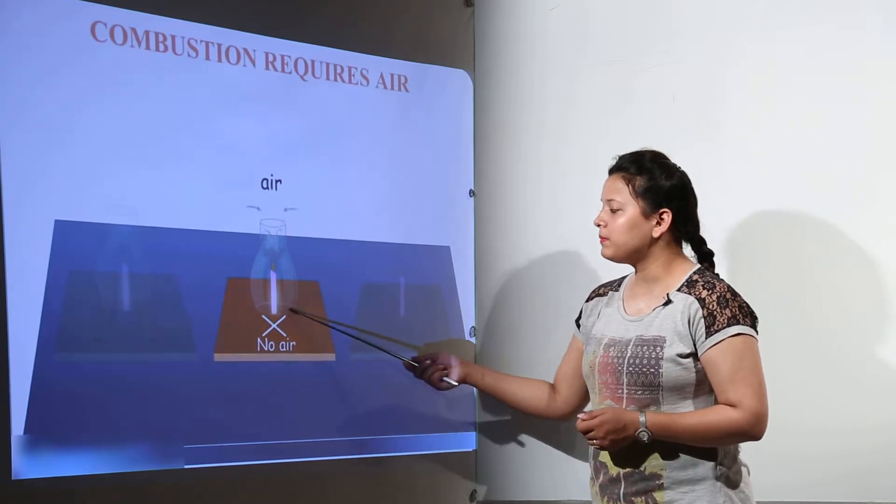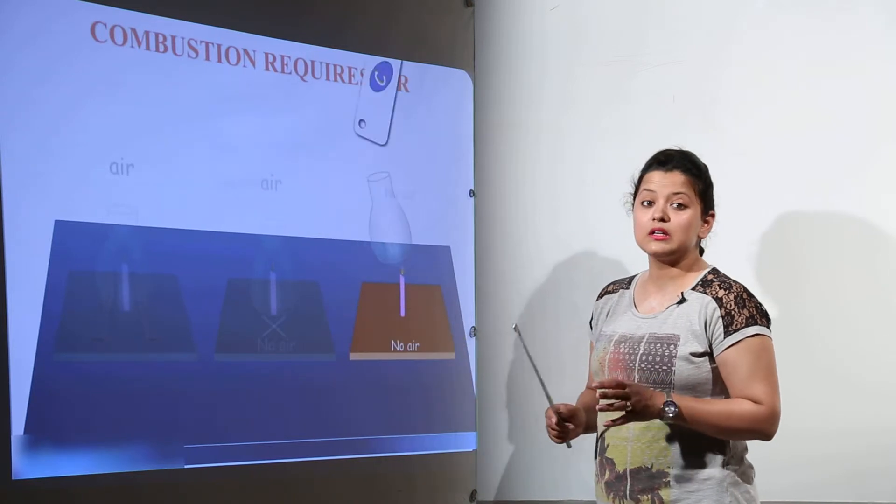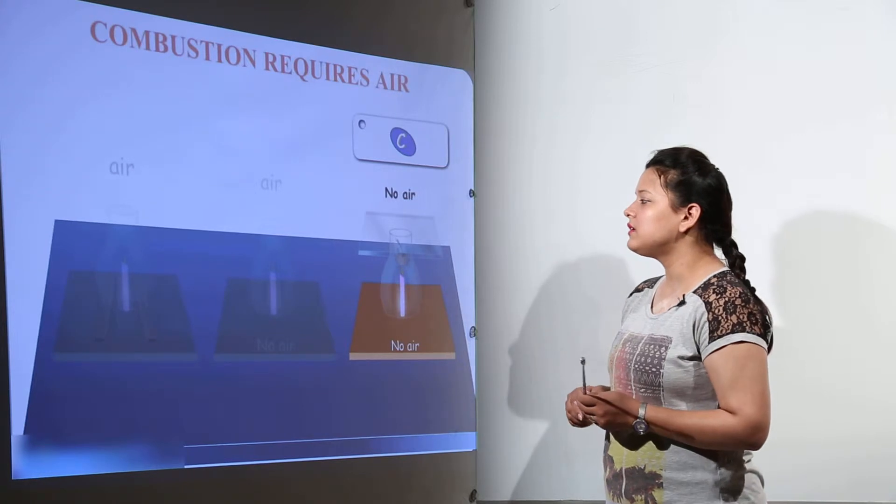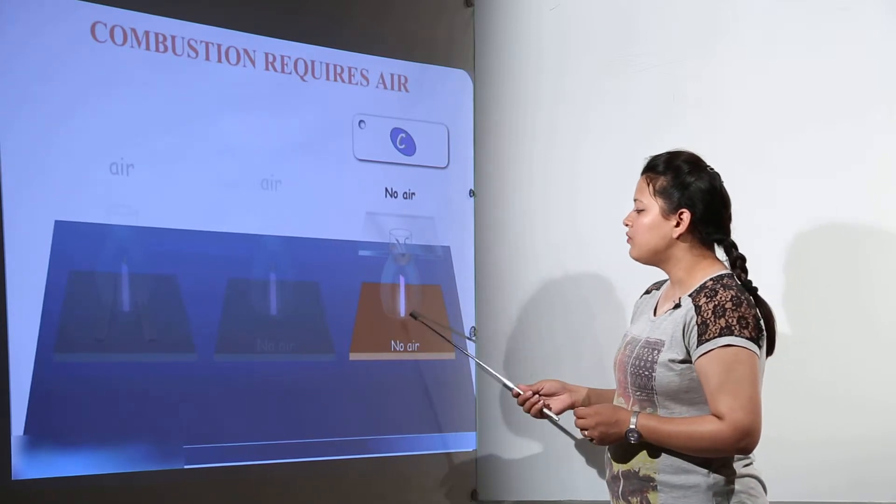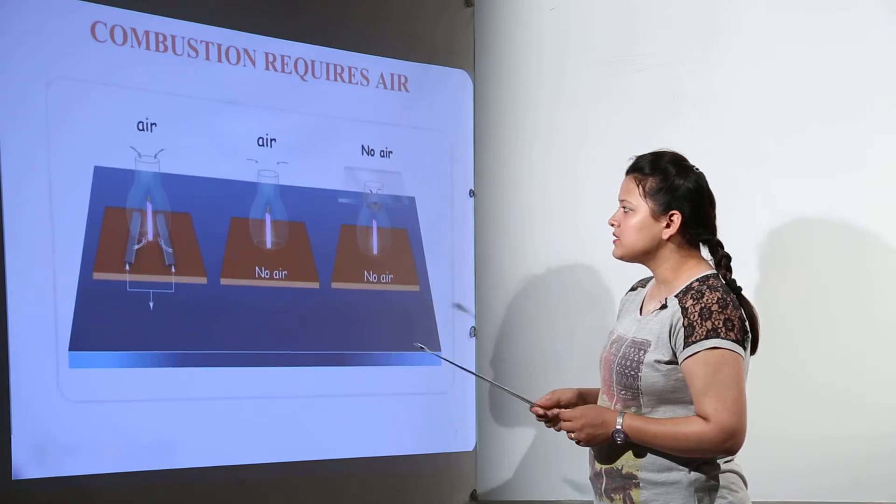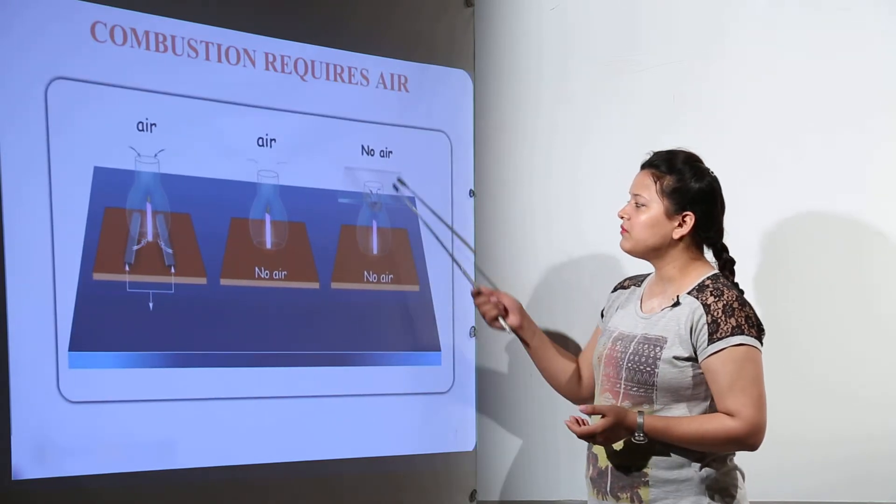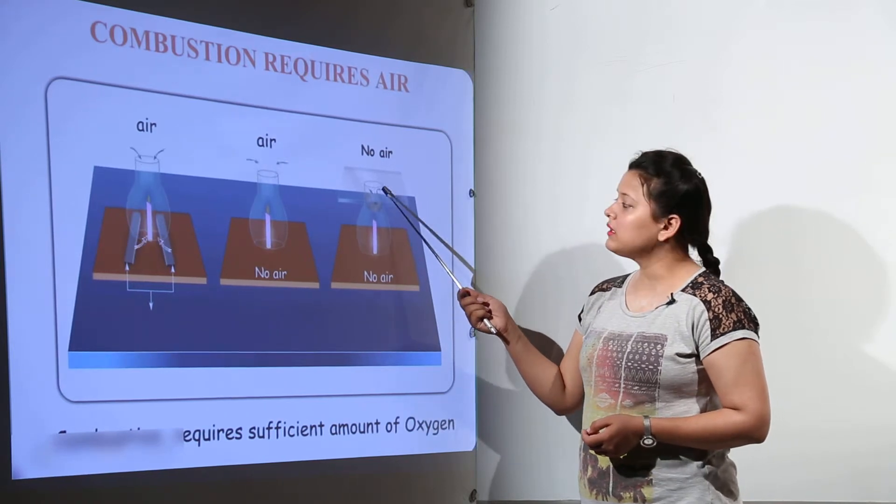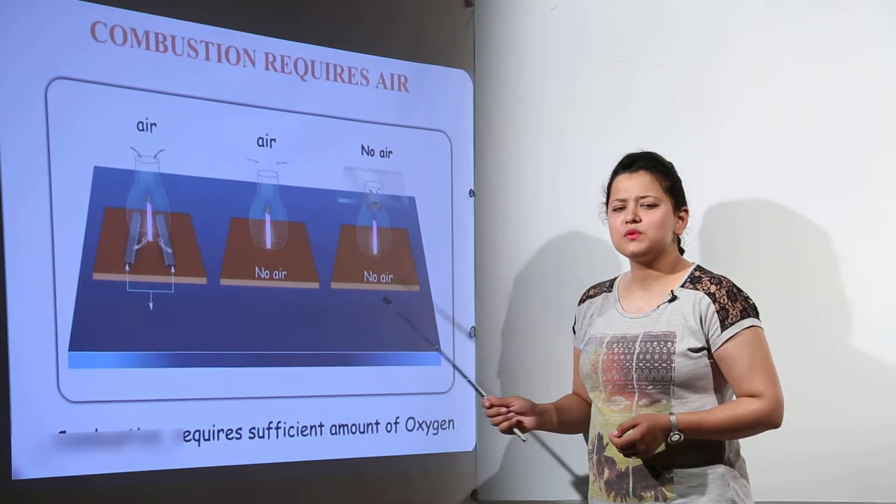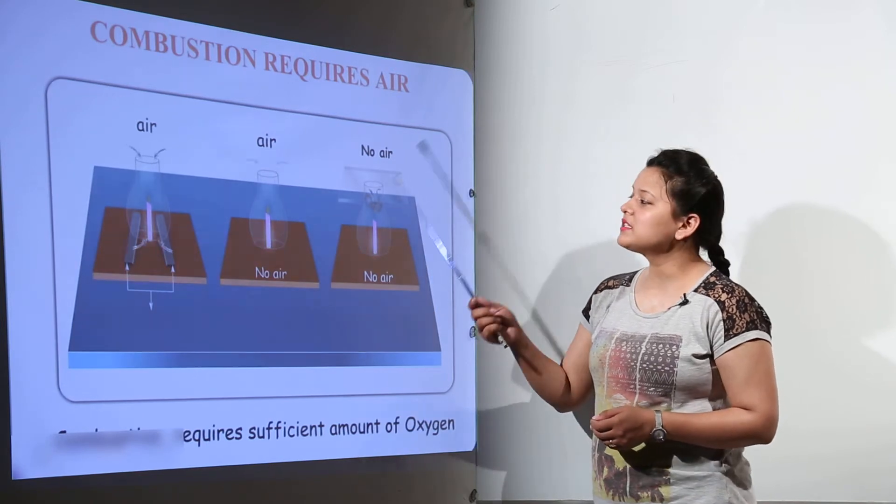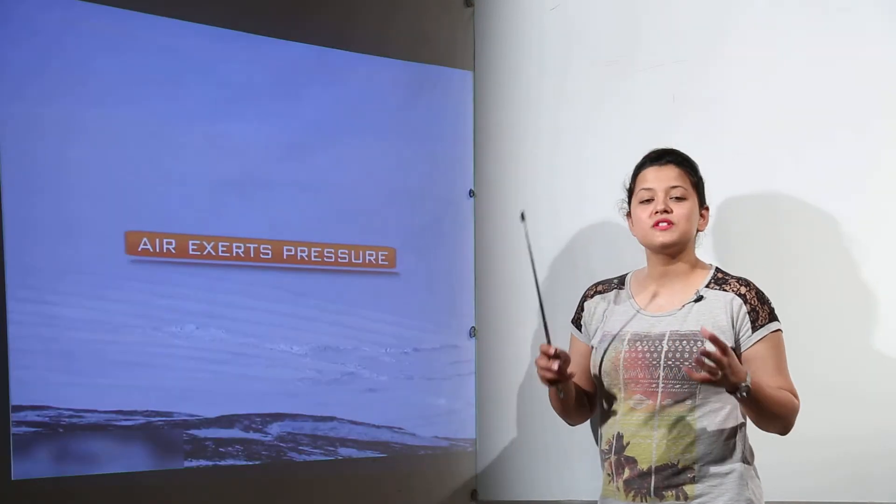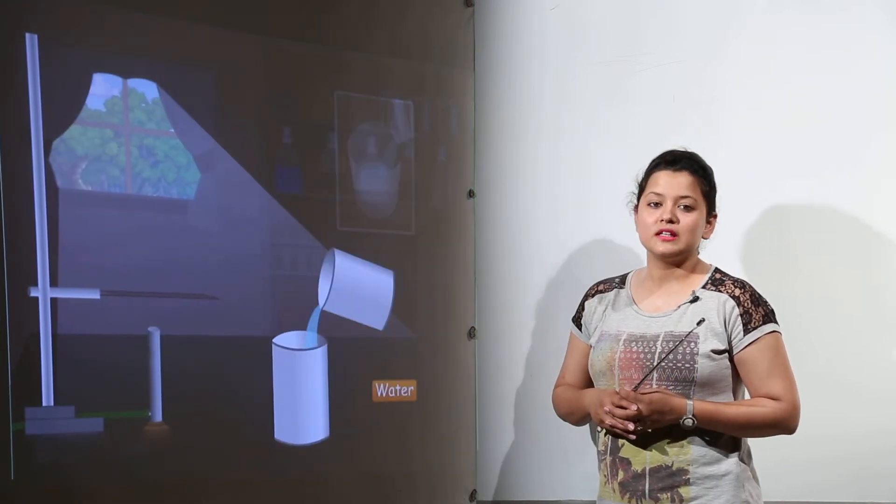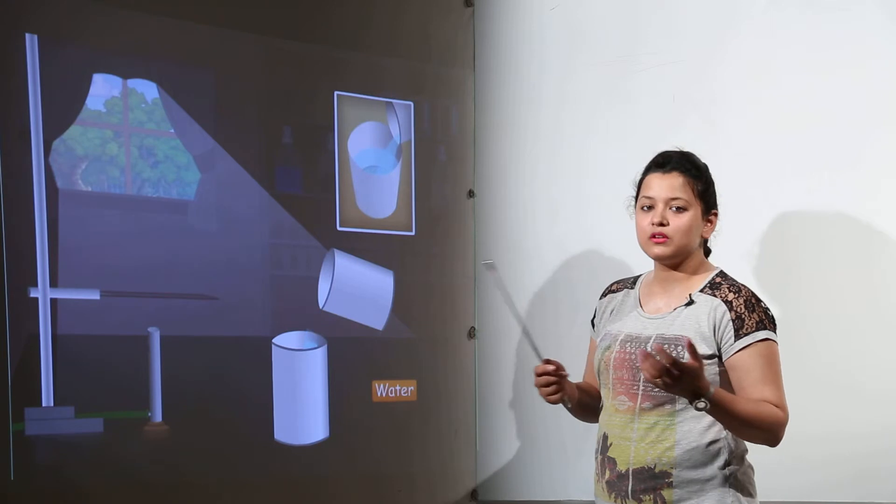In the second jar, no block was placed. The candle continued to burn for some time but extinguished shortly after. In the third jar, there was no block and no air, and we covered the mouth, so it extinguished immediately. What is the difference? In the first case, the air supply was continuing and was maximum, so the candle continued to burn for a long time.